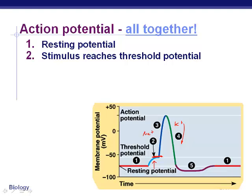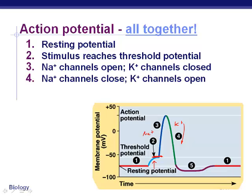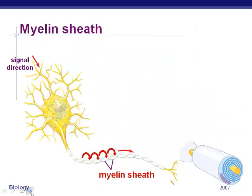To summarize the steps: stimulus reaches threshold potential, sodium channels open and potassium gates are closed, then sodium channels close and potassium channels open — this gets us to plus 40 millivolts. Then the potassium leaving brings it back to minus 65 millivolts. Finally, the sodium-potassium pumps actively restore the ion concentrations — sodium out, potassium in — keeping us at minus 65 and ready to go again.